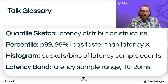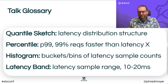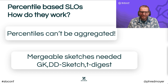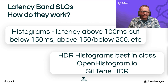A latency band is really one of those bins. Say my latency sample range is 10 to 20 milliseconds — if I have a 15-millisecond sample, it drops in that latency band. Percentile-based SLOs normally can't be aggregated because of the math behind it, so most commercial solutions use sketches: the GK sketch, the DD sketch recently released by Datadog, and Ted Dunning's T-Digest approximate histogram.